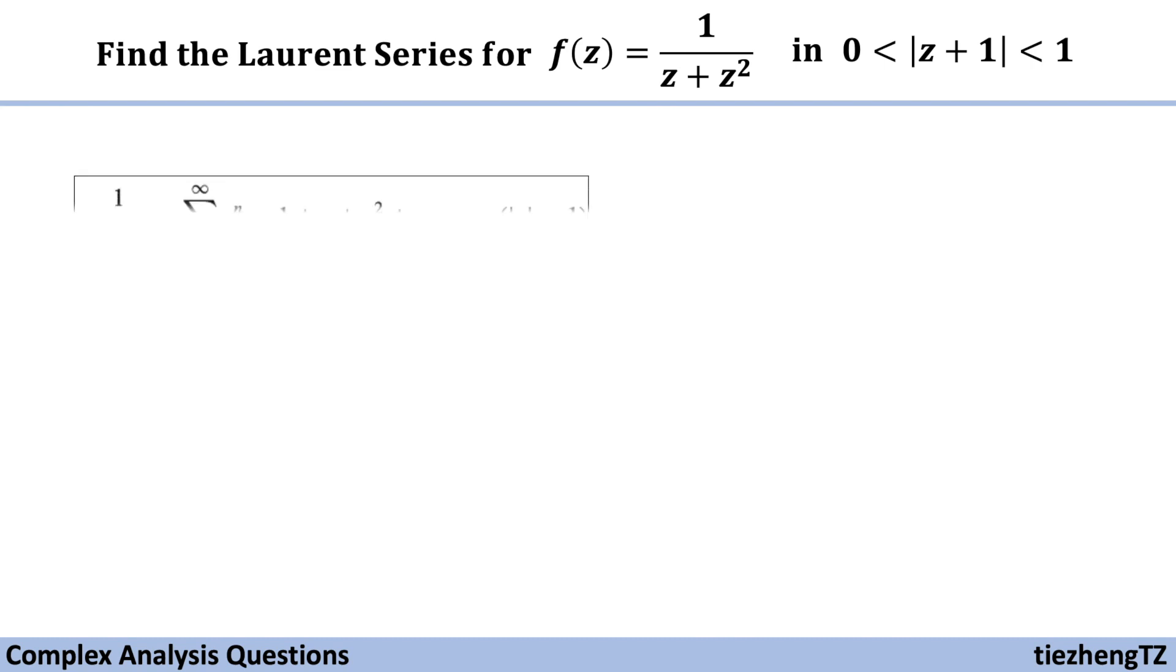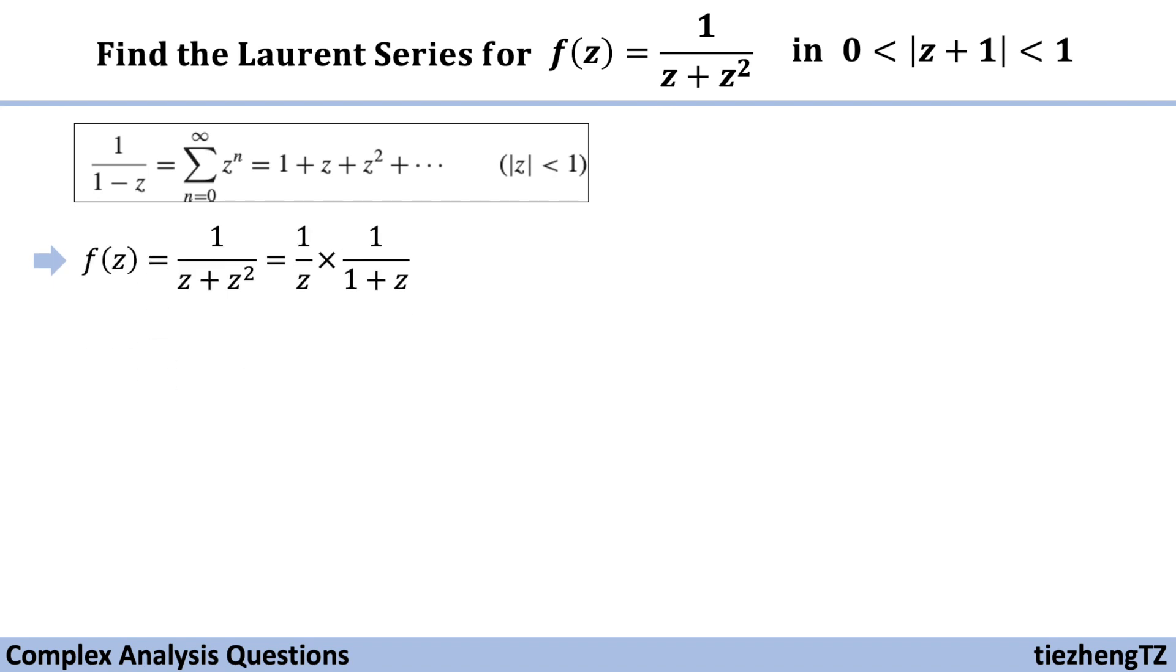So first we know we are still going to use this format. The next question becomes how can we get the so-called 1 minus z part in the denominator based on this given function.